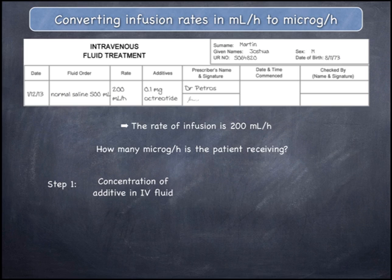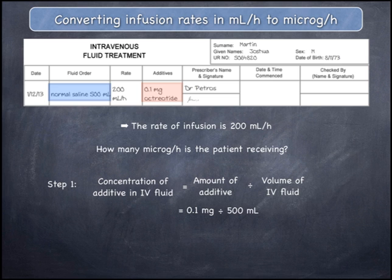Both of these quantities can be read from the order. The concentration is equal to the amount of octreotide divided by the volume of the IV fluid, which is 0.1mg divided by 500mL, which gives 0.0002mg per mL.